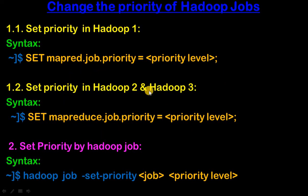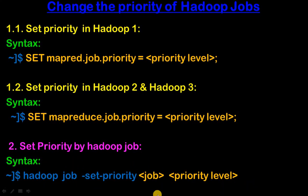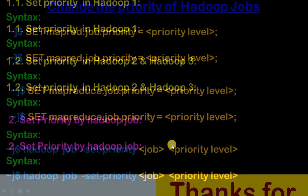The second way is to set priority using the Hadoop job command. The syntax is: hadoop job -set-priority <job_name> <priority_label>. We can set a particular job's priority using this Hadoop job command. We can also set all job priorities using the MapReduce property. So this is how we can set priority, and we have seen the types of schedulers in Hadoop.